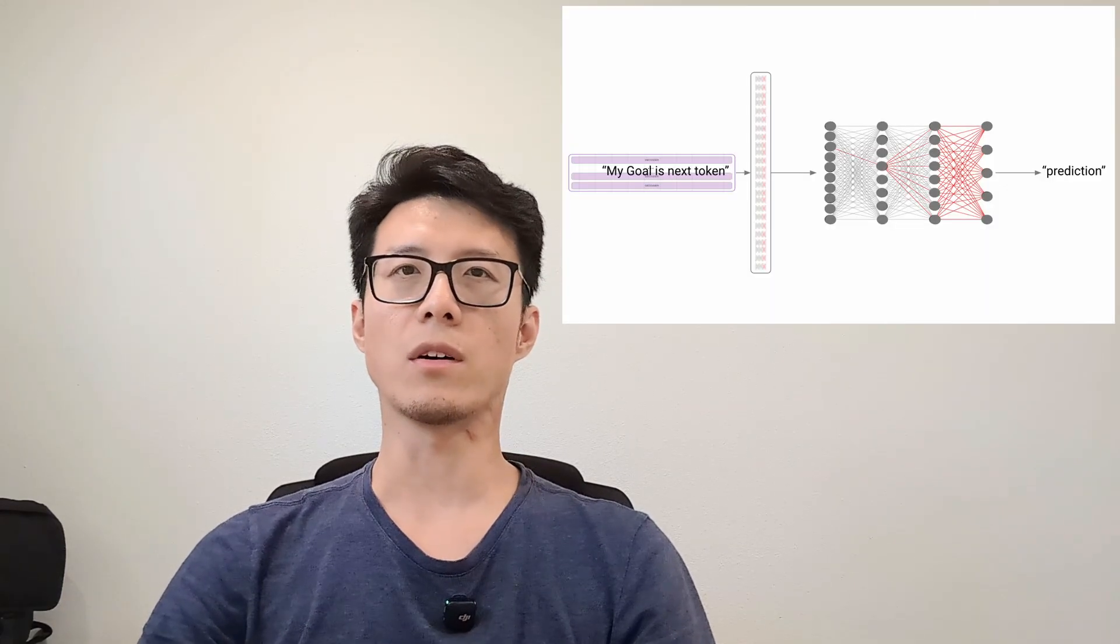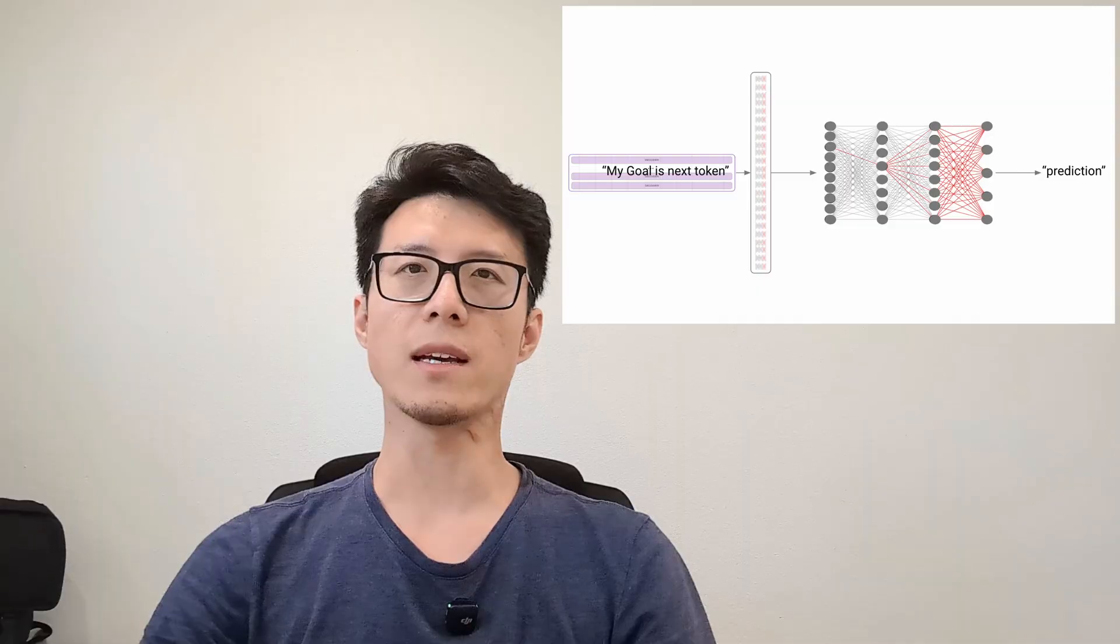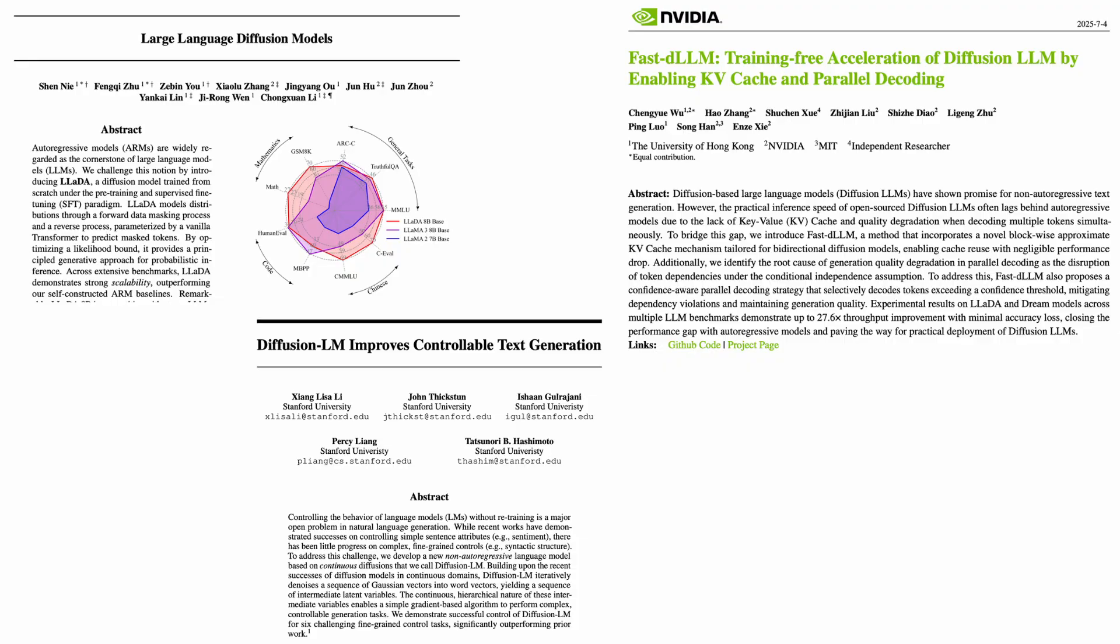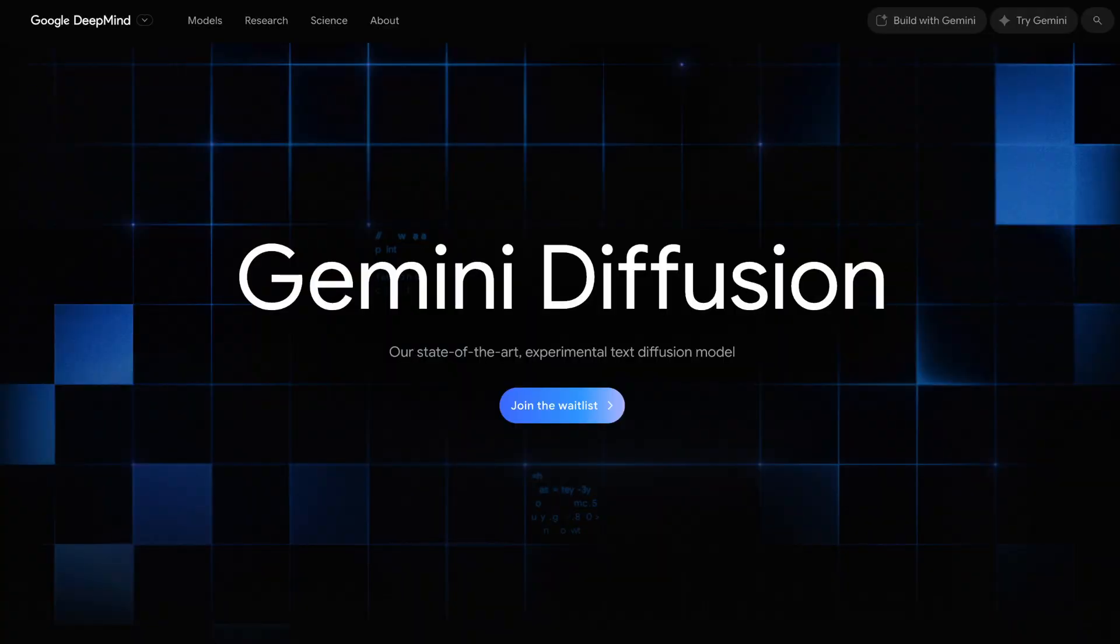Hello everyone, for years large language models have been built on autoregressive foundations, generating tokens one word at a time. However, recently there's a new trend: diffusion large language models. For example, Google DeepMind has released Gemini Diffusion.